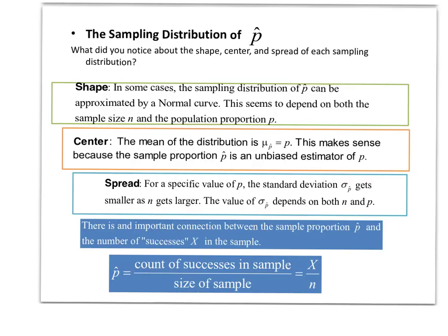Looking at the sampling distribution of p-hat — which includes all possible samples of a given size — in most cases it appears to be approximately normal, and it becomes more normal as sample size increases. The population proportion also has an effect. The center of our samples is equivalent to the proportion of our population, just as we saw with means. For any specific value of P, the standard deviation gets smaller as n gets larger, meaning we're more confident in our answer.